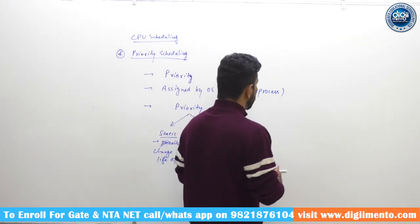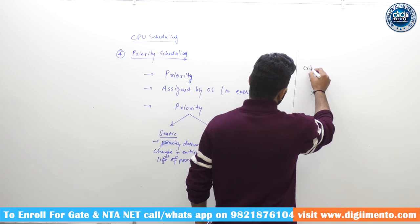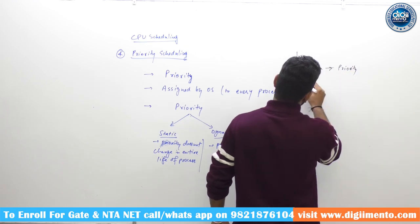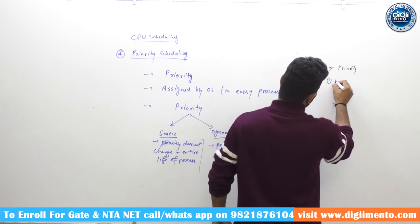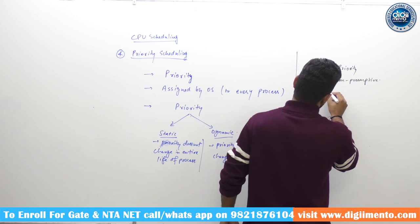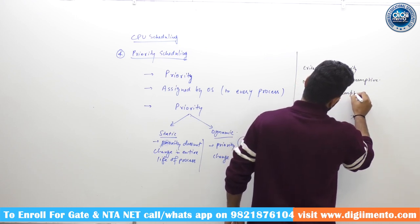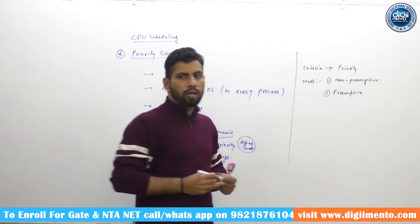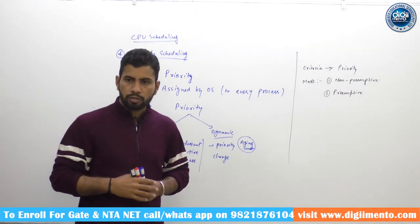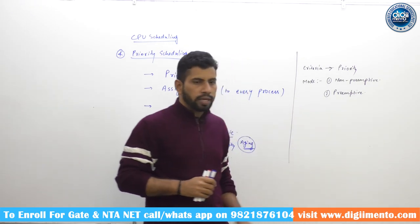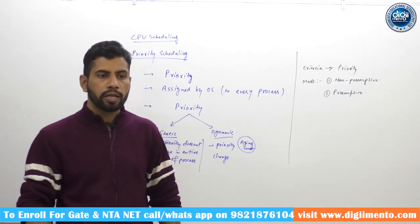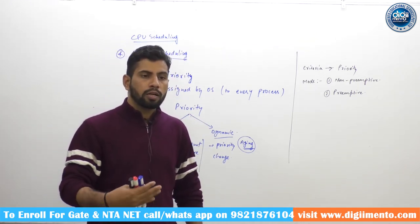Priority scheduling criteria is the priority number, and the mode is both — non-preemptive as well as preemptive. In non-preemptive mode, once a process gets the CPU, it executes until completion. In preemptive mode, preemption occurs if a higher-priority process arrives in the ready queue compared to the process currently running in the CPU.